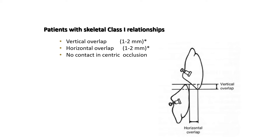There is a particular term: the vertical overlap, which is the upper-to-lower vertical overlap, set at 2 mm. The horizontal overlap is the horizontal distance between the upper and lower anterior teeth, which should be 1–2 mm non-contact in centric relation.